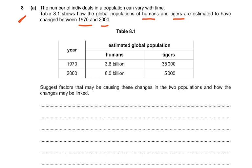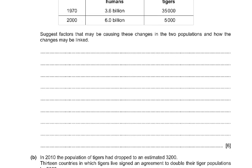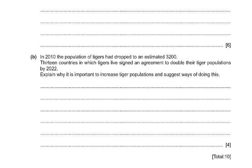Part B: in 2010 the tiger population had dropped to an estimated 3,200. Countries where tigers live signed an agreement to double their tiger population by 2022. Explain why it is important to increase the tiger population and suggest ways of doing this. This is the topic of conservation.